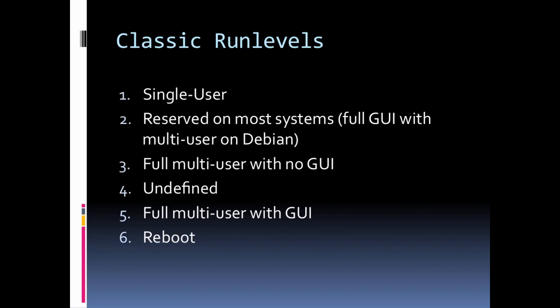Linux has this idea as well, and in the classic sense we call these run levels. Run levels define a specific level of functionality that a computer has at any given time. Over the years this has been redefined in many distributions. In newer systems that use the Upstart process there's still a sense of run levels for backwards compatibility, but this concept seems to be slowly going away as we move into the future.